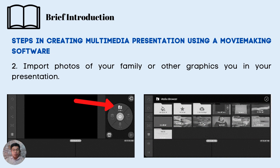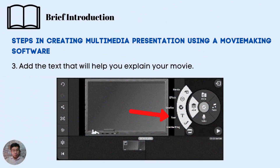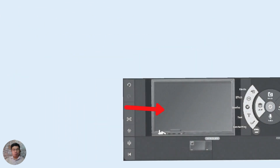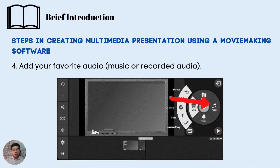When you click it, the media browser will appear where your saved files are located. The third step is to add text that will help you explain your movie — depending on what your movie or vlog is about. You can also add text to provide subtitles for your presentation, so that viewers can read along even if the audio is not very clear. We also have the fourth step: add your favorite audio, music, or recorded audio. You may add background music while your presentation plays, because it makes the audience feel more engaged with what they are watching.